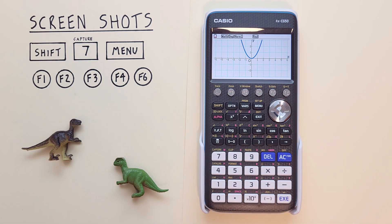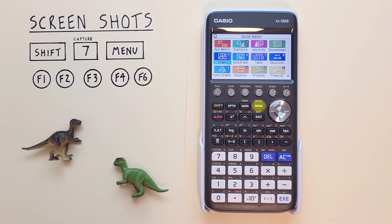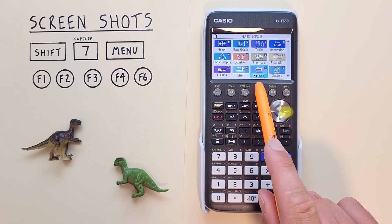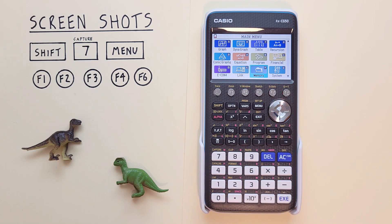If we want to find those screenshots to view them, what we do is go to our main menu, and scroll down and over to memory, highlight that and hit exe.